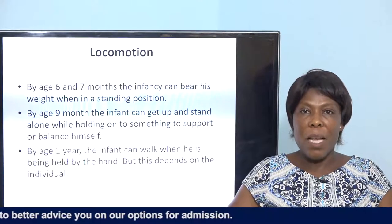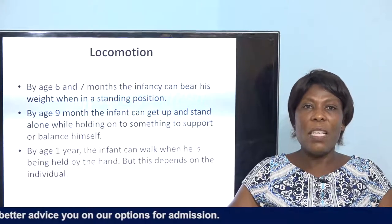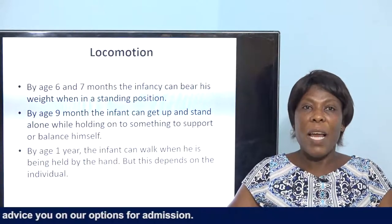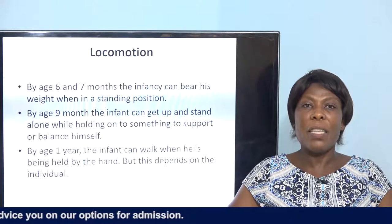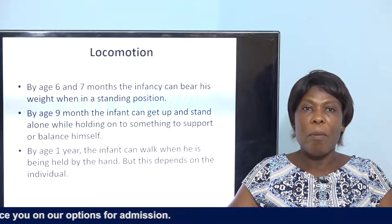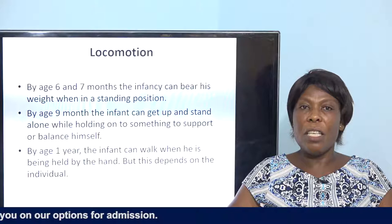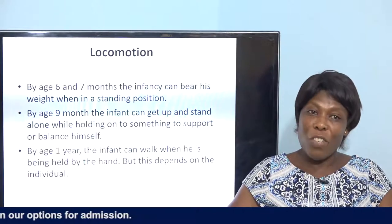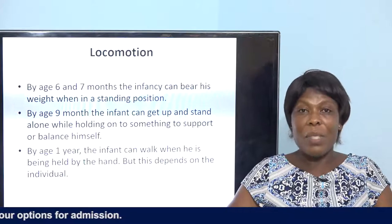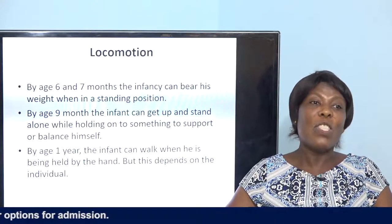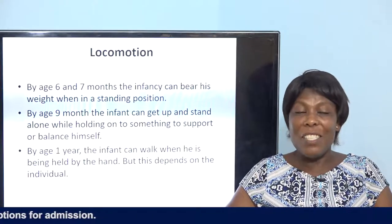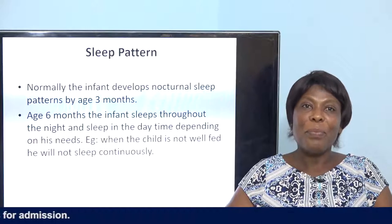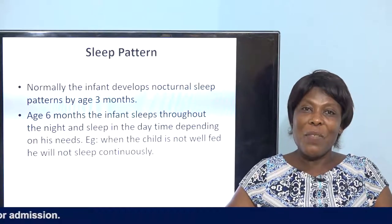By six to seven months the infant can bear its weight when in a standing position — you see them moving around a table or chair. By nine months the infant can get up and stand alone while holding onto something. By one year the infant can walk when held by the hand, but this depends on the individual. They are unique — you cannot compare one child's walking with another's at one year.